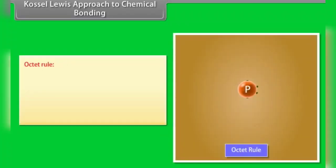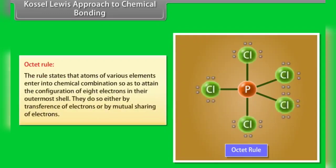The octet rule states that atoms of various elements enter into chemical combination so as to attain the configuration of eight electrons in their outermost shell. They do so either by transference of electrons or by mutual sharing of electrons.